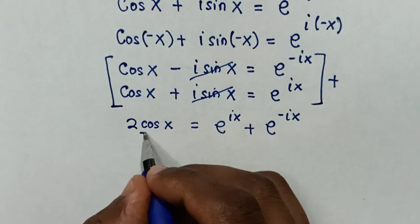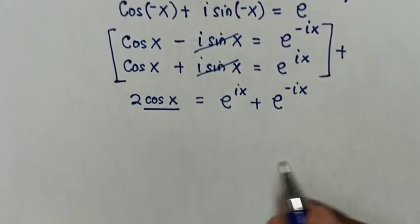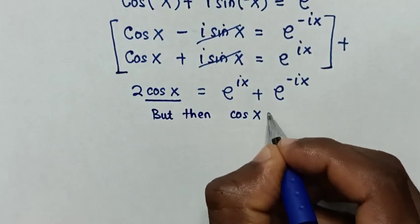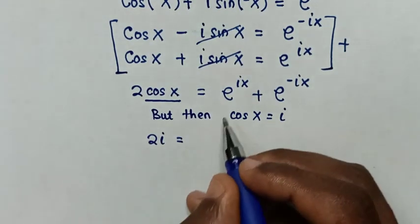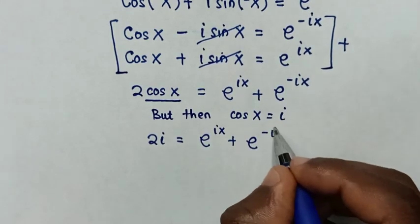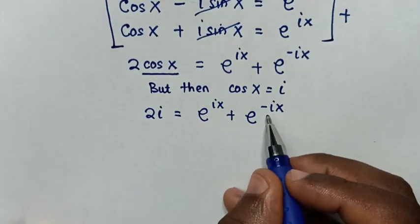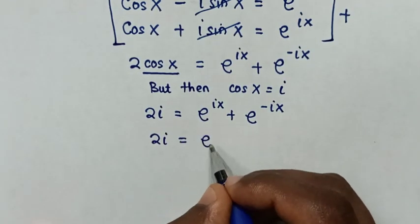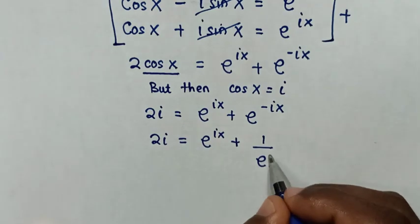Then in the next step, from here recall that cos of x is equal to i. So we'll write that cos of x is equal to i, then here we'll substitute i. So it will be 2i is equal to e to the power of ix plus e to the power of negative ix. From here, e to the power of negative ix is the reciprocal. So it will be 2i is equal to e to the power of ix plus 1 over e to the power of ix.